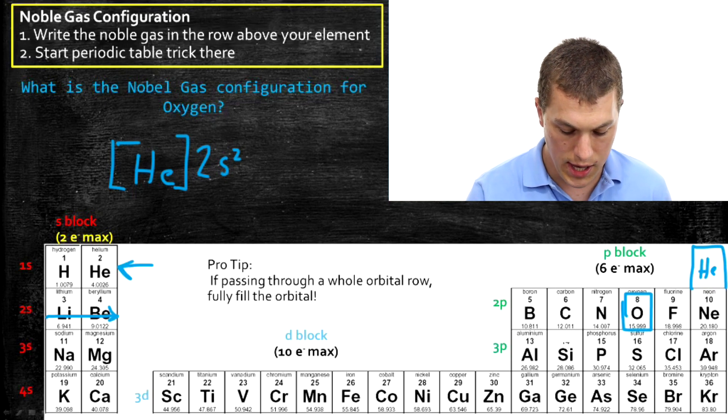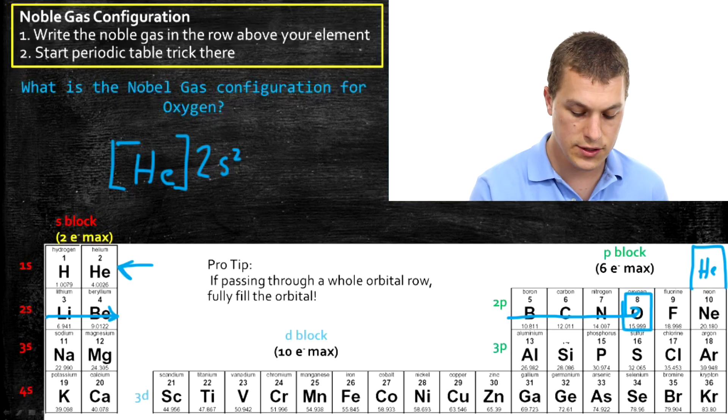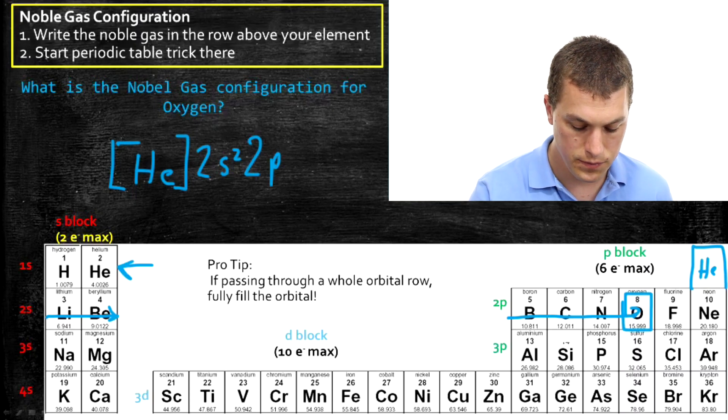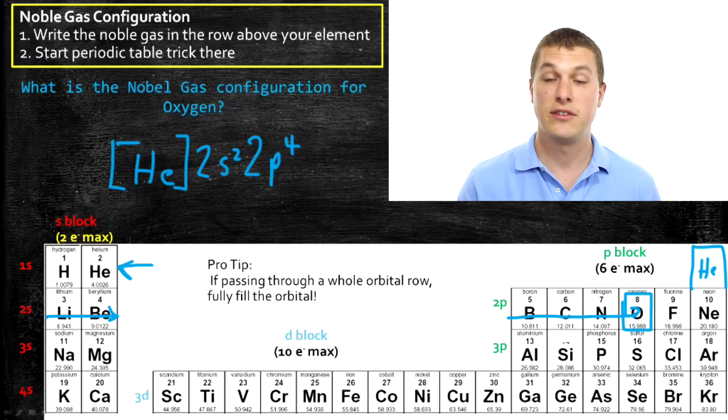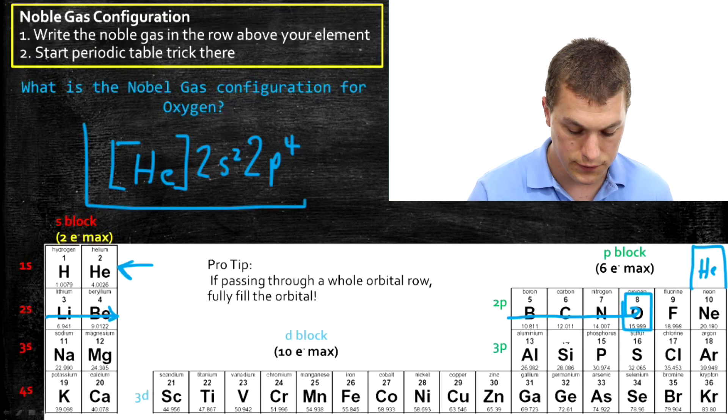And then we go in to the 2p row. And we go all the way to oxygen. So that passes through four boxes. So we have 2s2, 2p4. And that's the noble gas configuration for oxygen. We have the same core electrons as helium. And then we have 2s2 and 2p4. And so that's the noble gas configuration for oxygen.